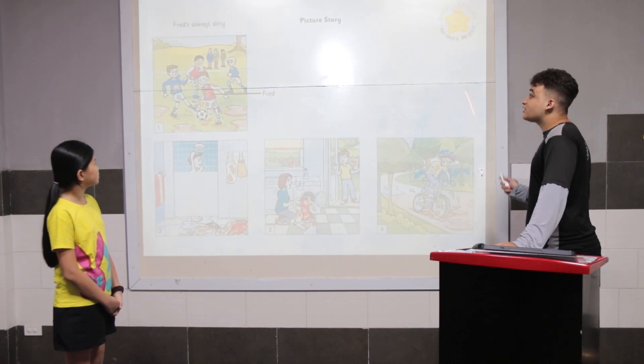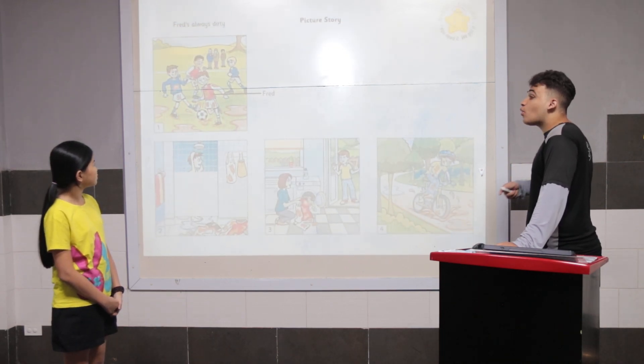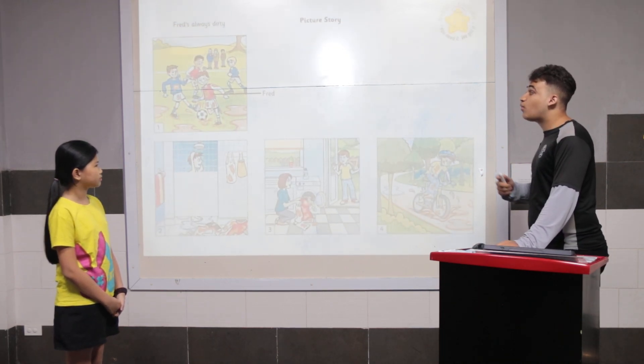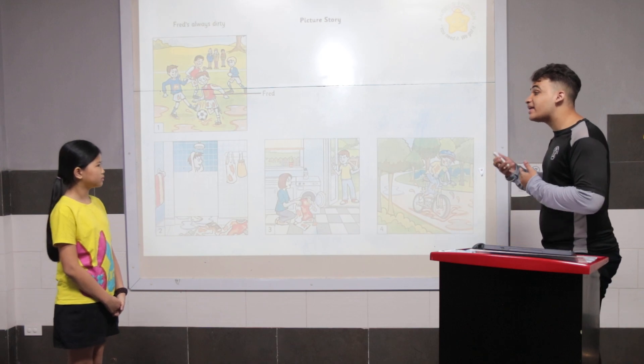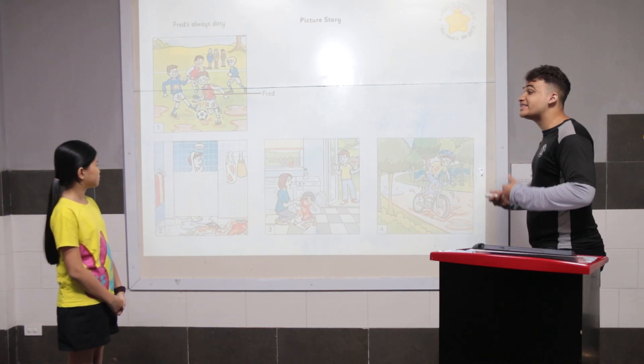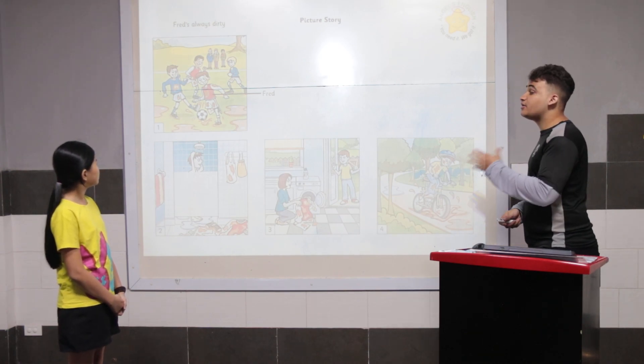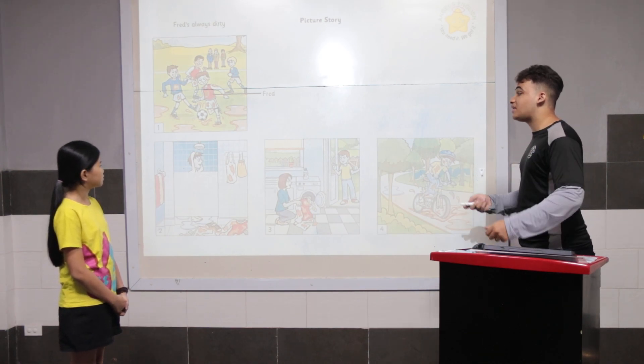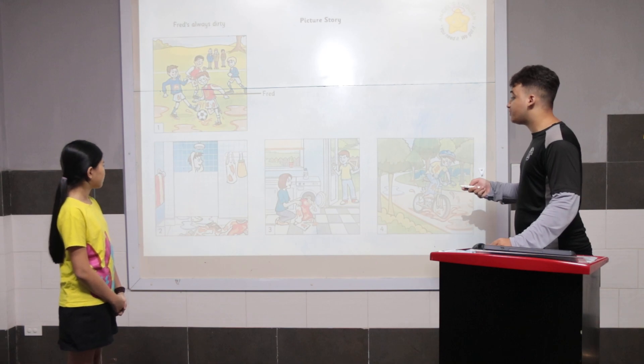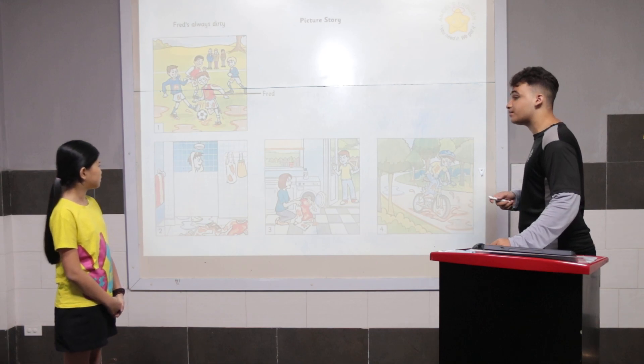So, this story is called Fred's Always Dirty. In picture one, Fred is playing soccer and he's getting very, very, very dirty. Can you tell me what's happening in two, three, and four?